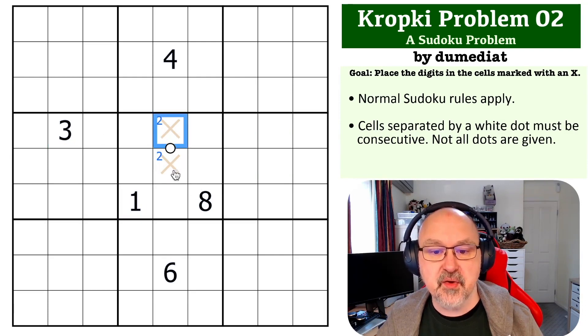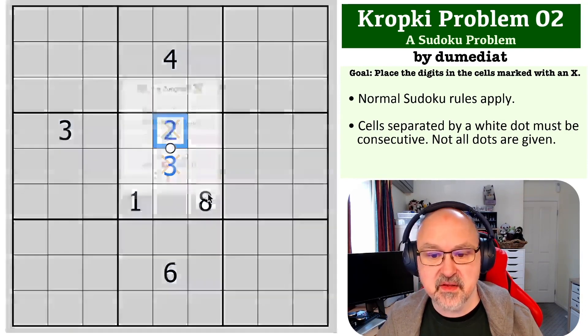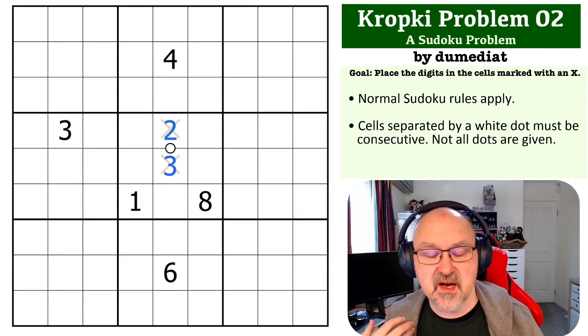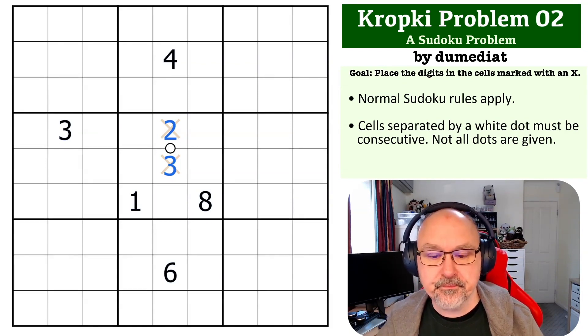And because that cell sees a three, that has to be the three and that has to be the two. And that's the way I would have solved this if I was looking at this in a puzzle now most of the time, or at least that's the way I would hope I would see it.